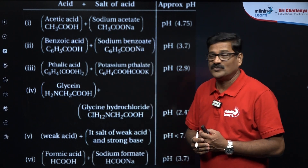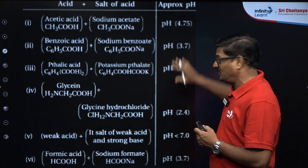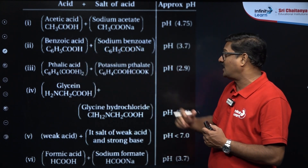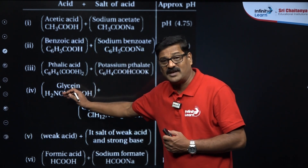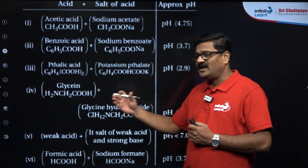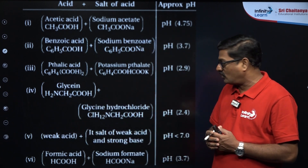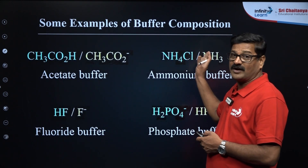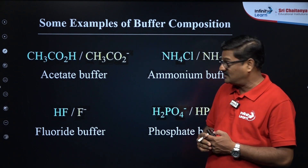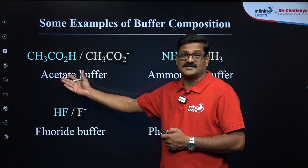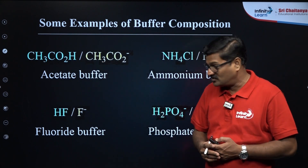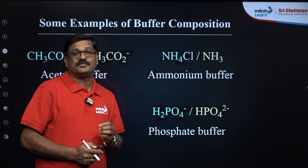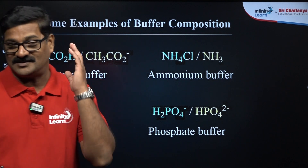Examples of acidic buffers include acetic acid and sodium acetate, benzoic acid and sodium benzoate, phthalic acid and sodium or potassium phthalate, glycine (amino acid) and glycine hydrochloride, formic acid and sodium formate, and HF and fluoride (fluoride buffer). For basic buffers: ammonium chloride and ammonium hydroxide. Also, a phosphate buffer and the salt of any polyprotic acid can serve as a buffer.